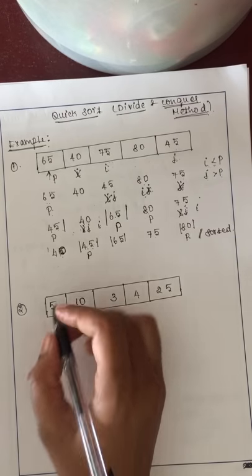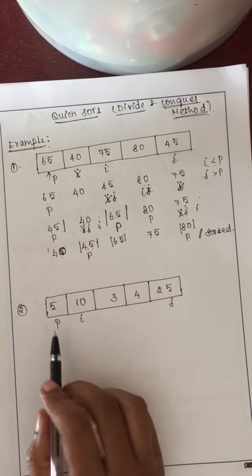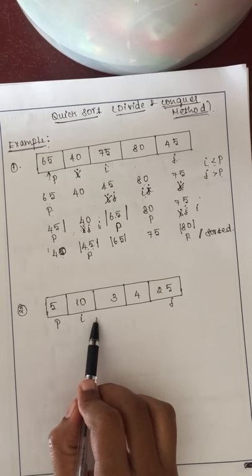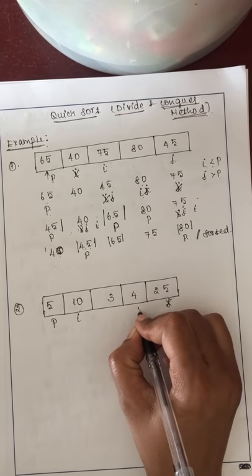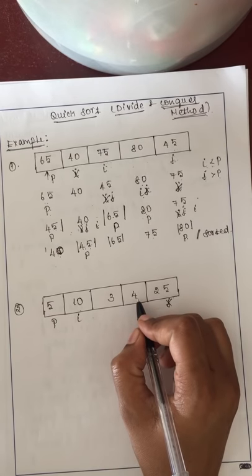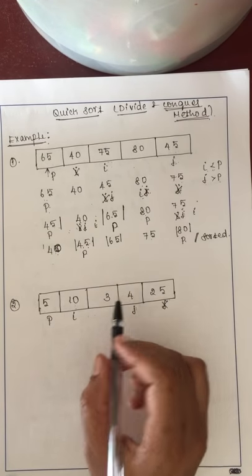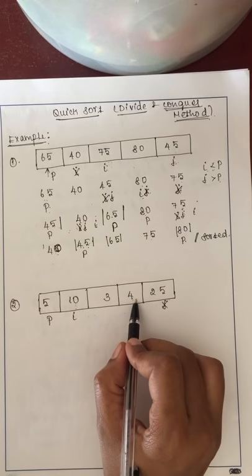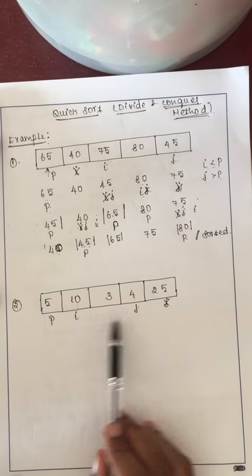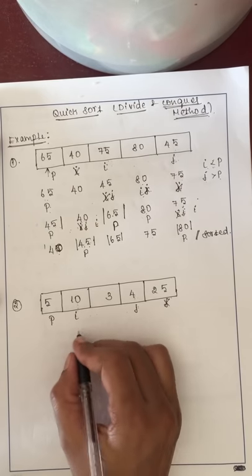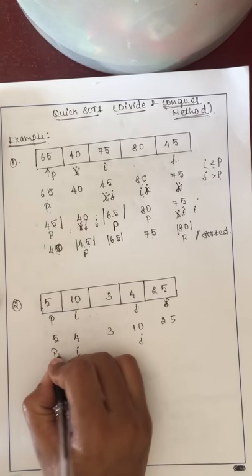Now we will discuss another example. Again we fix the first element as the pivot, i is the element next to pivot, and j is the last element. Comparing i with pivot: i is greater, so we cannot increment i. We go to j: since pivot is greater than j, we can decrement j one position. Comparing again, j is now lesser, so we cannot decrement further and cannot increment i either. We check i and j positions: i is lesser than j, so we directly swap i and j.